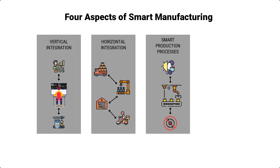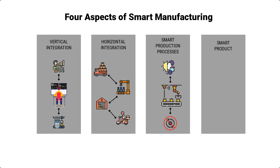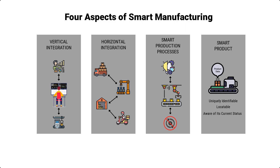And then lastly, a totally new aspect to manufacturing systems is the establishment of intelligent or smart products, whose technical, commercial, and administrative data is kept consistent and made accessible within the entire value stream at all times. Intelligent products are products that are uniquely identifiable, can be located at all times, are aware of their own current production status, know their production and testing history, and know the requirements needed to achieve their targets.